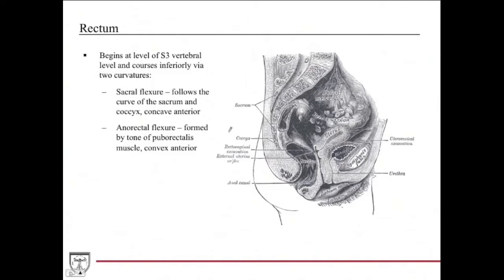It begins at the S3 vertebral level and courses inferiorly via two curvatures. The first curvature is the sacral flexure, which follows the curve of the sacrum and coccyx, and is described as concave anterior. The other flexure is the anorectal flexure, which is convex anterior, and that's formed by the tone of the puborectalis muscle, which compresses here and helps regulate passage of stool.